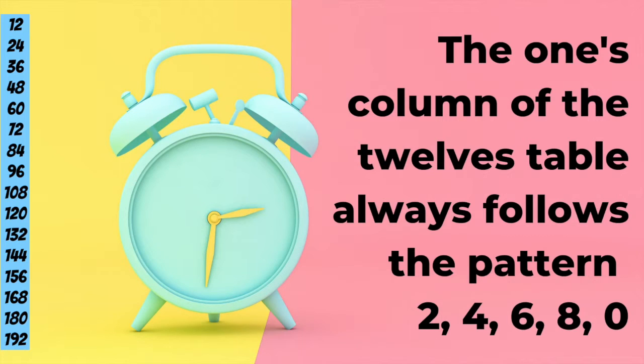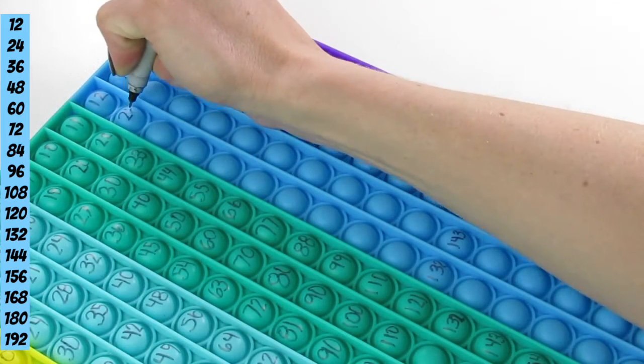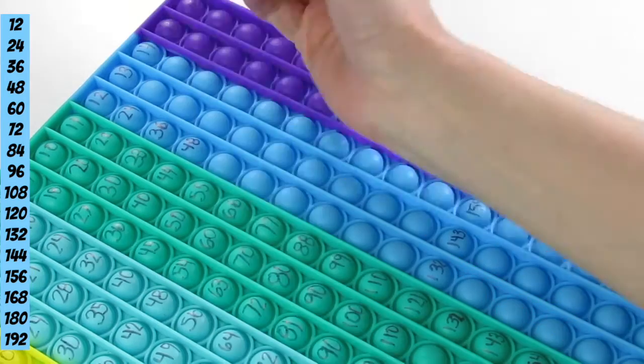And that works for the 12s. You can check it out here later. You can also double-check to make sure that you're on the right path by checking in the ones column and making sure that it always follows the pattern 2, 4, 6, 8, 0.